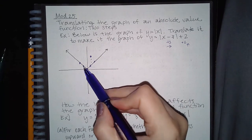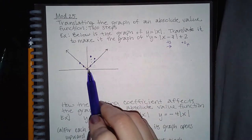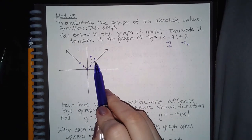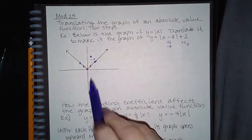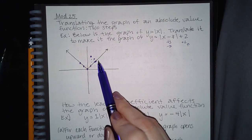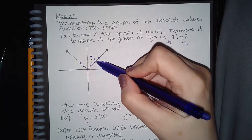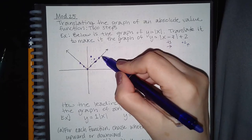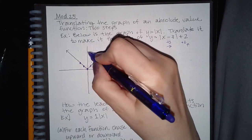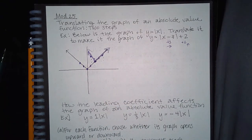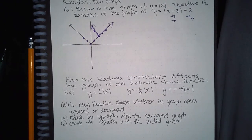Take the next point and move it over one, two, three and up two. Then take this point, move it over one, two, three and up two. Move this point over one, two, three and up one, two. The point that was the peak at (2,2) — move it over one, two, three and up two. The new graph is the same V-shape, just shifted to the right three and shifted up two units.